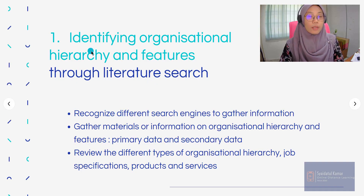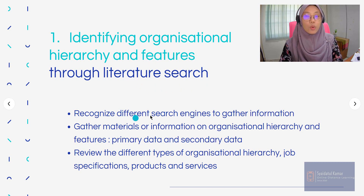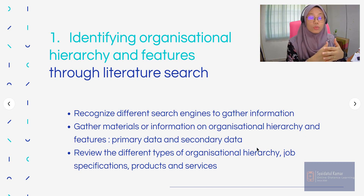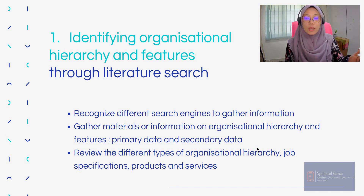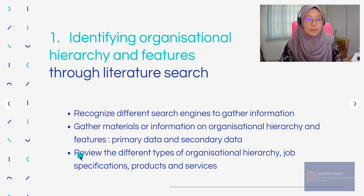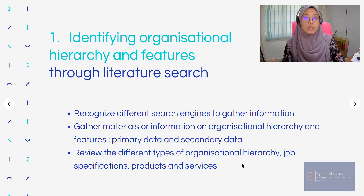For number 1, identifying the organisation through literature search: literature search means going to the internet and using search engines to gather information on organisational hierarchy and features — the primary data and also the secondary data. You can go to the website of the company you have chosen and take a look at it. You can also, if you know the company personally, go and learn about the company by visiting them yourself. Afterwards, you review the different types of organisational hierarchy, job specifications, the products, and also the services.